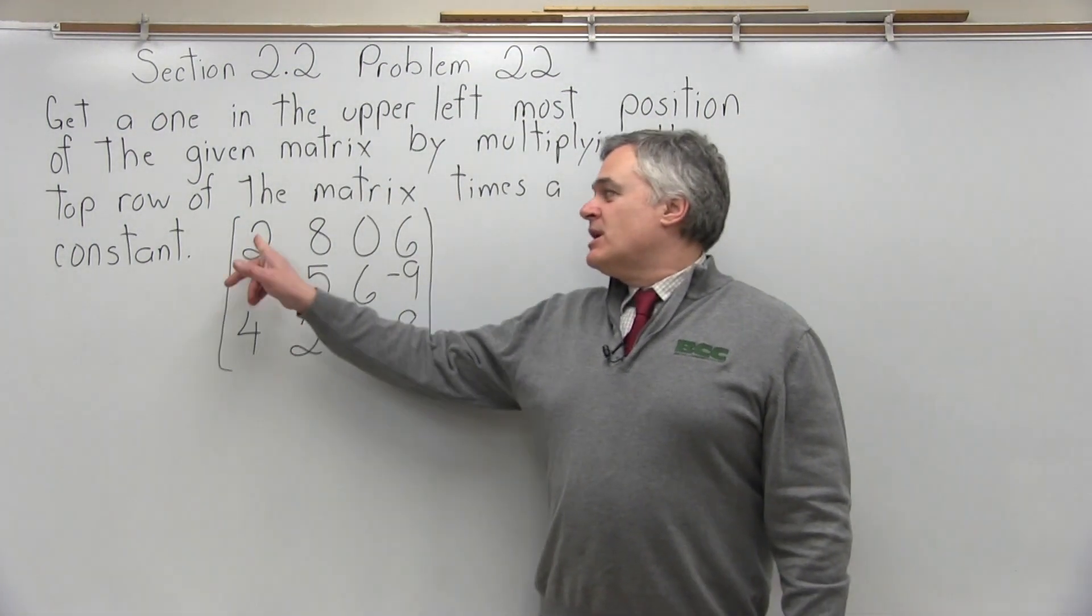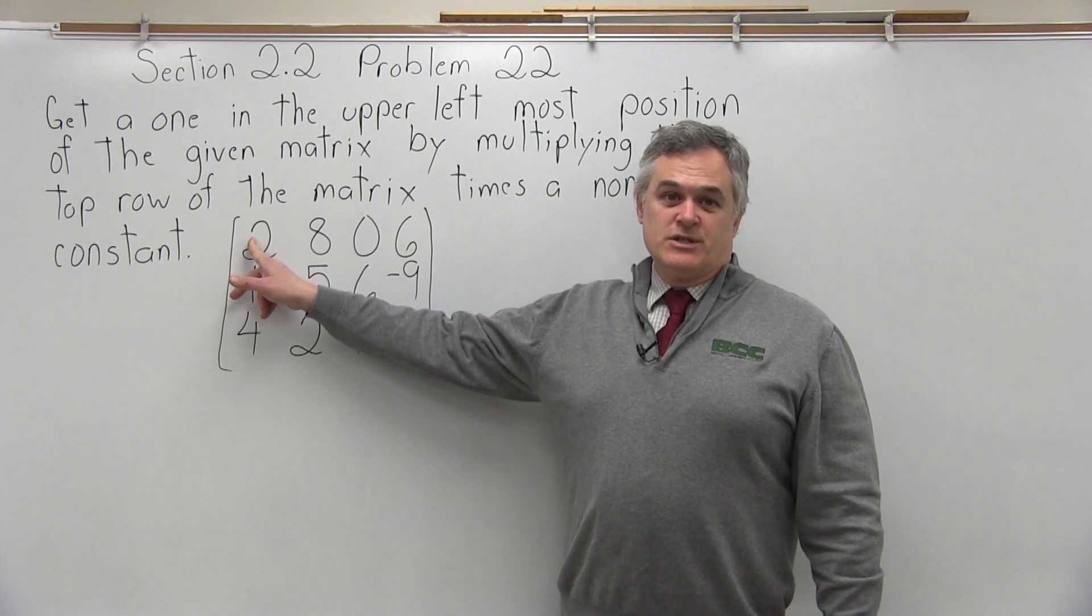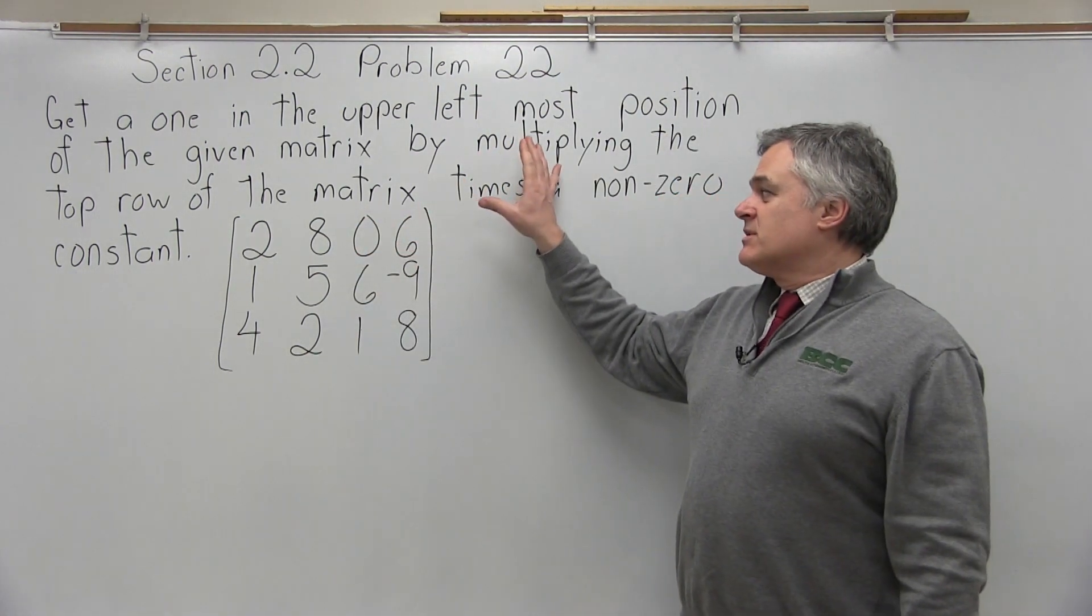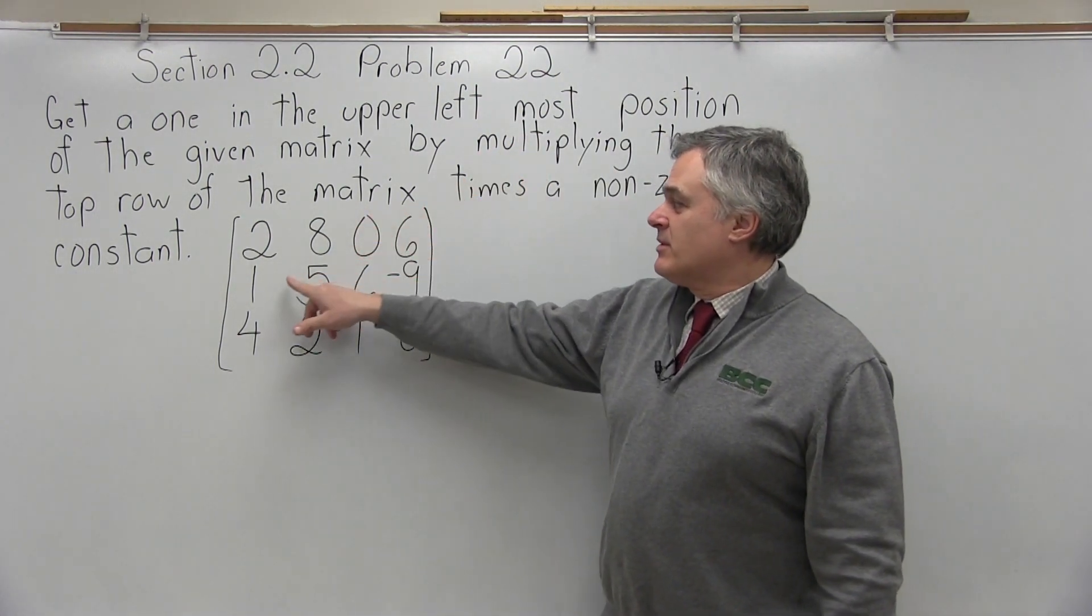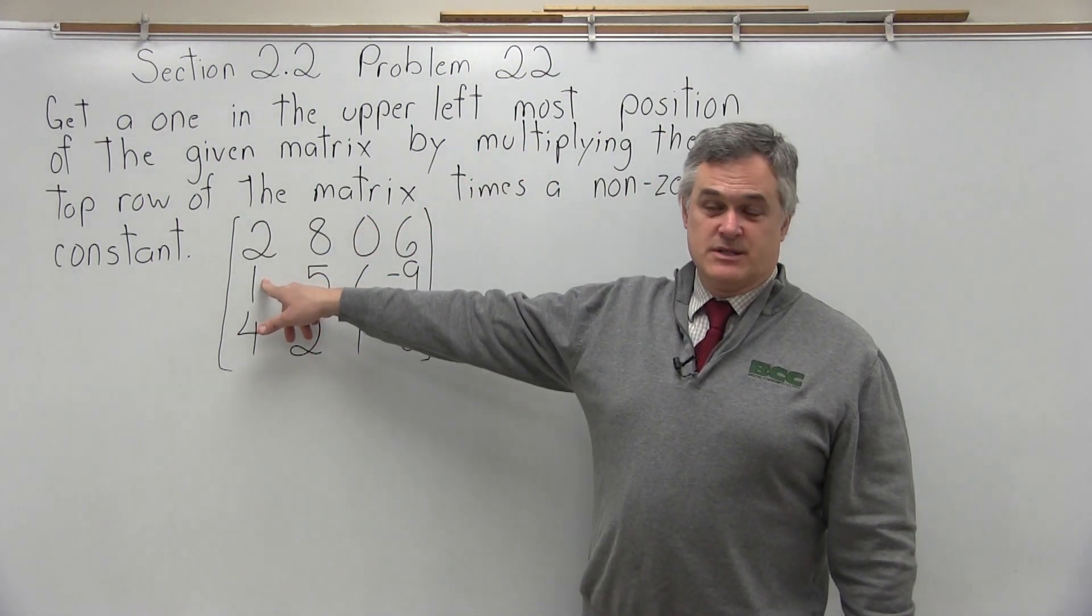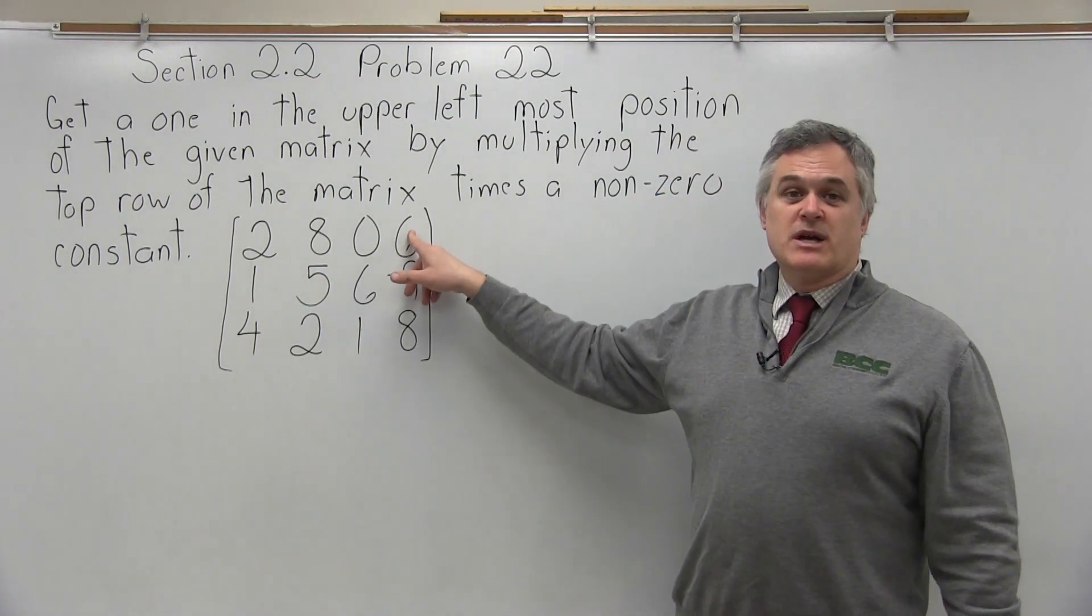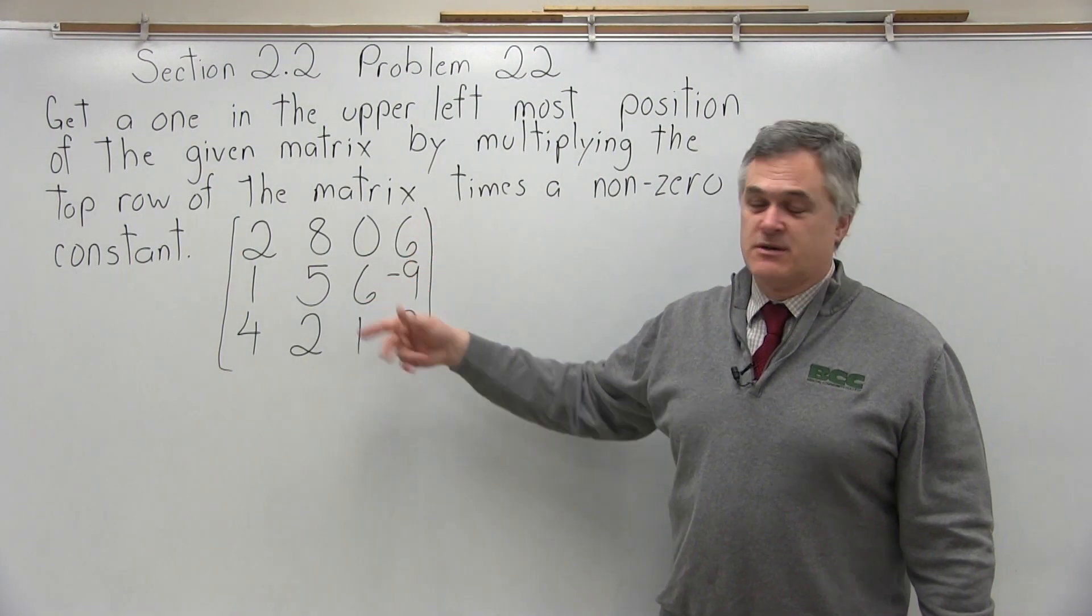So here's our matrix. The number in the upper leftmost position is a 2 and we want to turn it into a 1. Now if we didn't have these specific directions we could get a 1 by swapping rows also because there is a 1 that lines up. But this problem specifically says by multiplying the top row times a non-zero constant, in other words a number that's not zero.